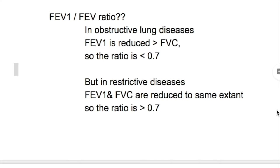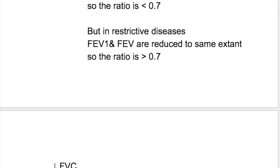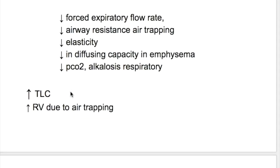In obstructive lung diseases, FEV1 is reduced more than FVC, so the ratio is less than 0.7. But in restrictive diseases, FEV1 and FVC are reduced to the same extent, so the ratio is more than 0.7. Number four: there is decreased expiratory flow rate, decreased airway resistance, air trapping, decreased elasticity, and decrease in diffusing capacity in emphysema.